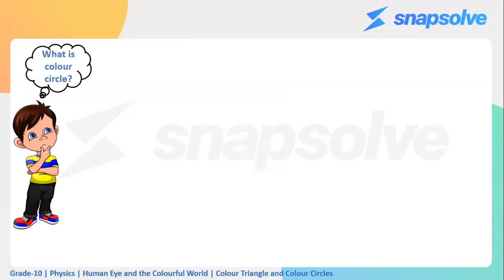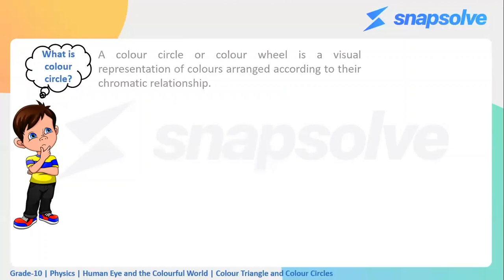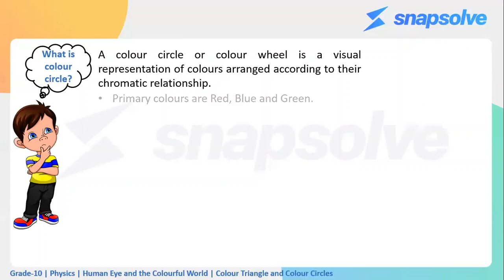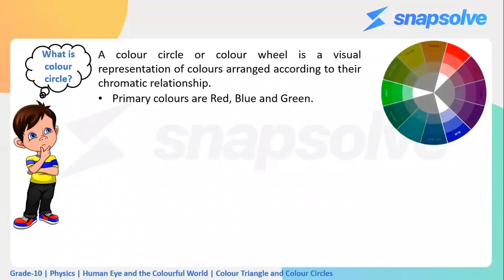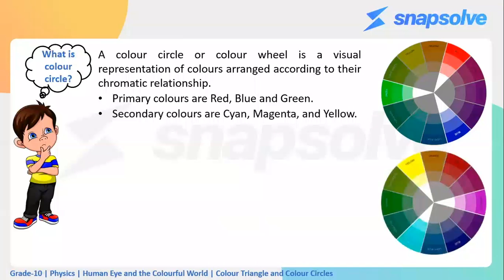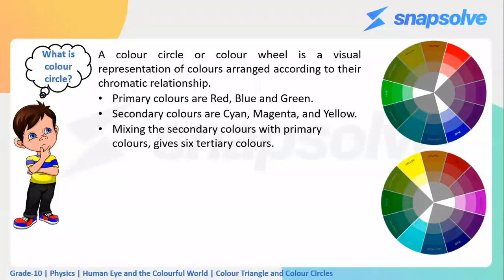What is a color circle? A color circle is a visual representation of colors arranged according to their chromatic relationship. The primary colors in the color circle are red, blue, and green. When we add only two primary colors, we get secondary colors. The secondary colors are cyan, magenta, and yellow.